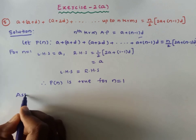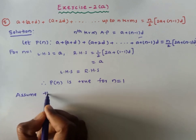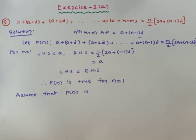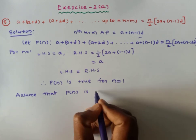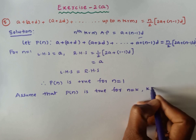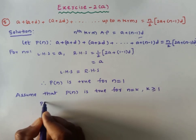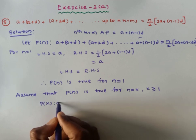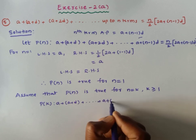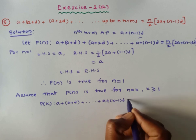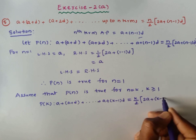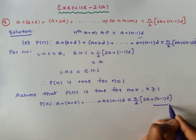The second step is the assumption. Assume that the given statement P(n) is true for n=k, where k ≥ 1. Then P(k) becomes: a + (a+d) + ... + (a+(k−1)d) = k/2 × (2a + (k−1)d). Let this be equation 1. Now, to show the statement is true for all natural numbers, we need to show it is true for n = k+1.